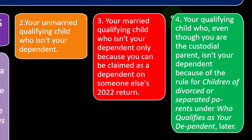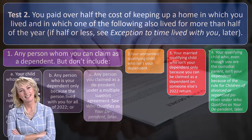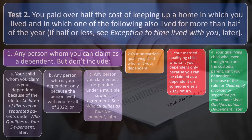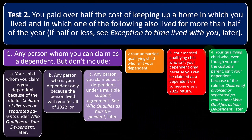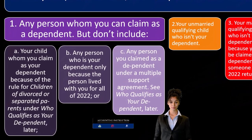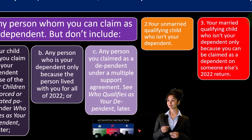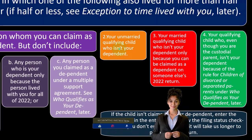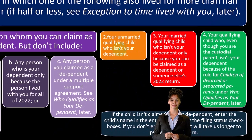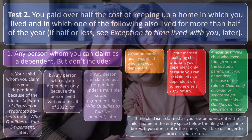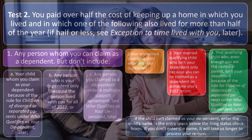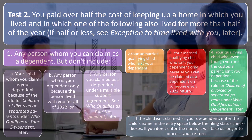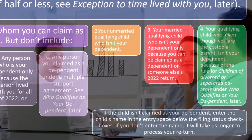In a divorce situation, arguments often happen regarding the child. The child can impact the filing status — if they're the only child involved, they could push someone from single to head of household, which has a significant tax impact, and there are other credits involved with who claims the child. If the child isn't claimed as your dependent but still qualifies you for head of household, enter the child's name in the entry space below the filing status checkbox, so the IRS can see the requirement has been met even though the child isn't listed as a dependent.